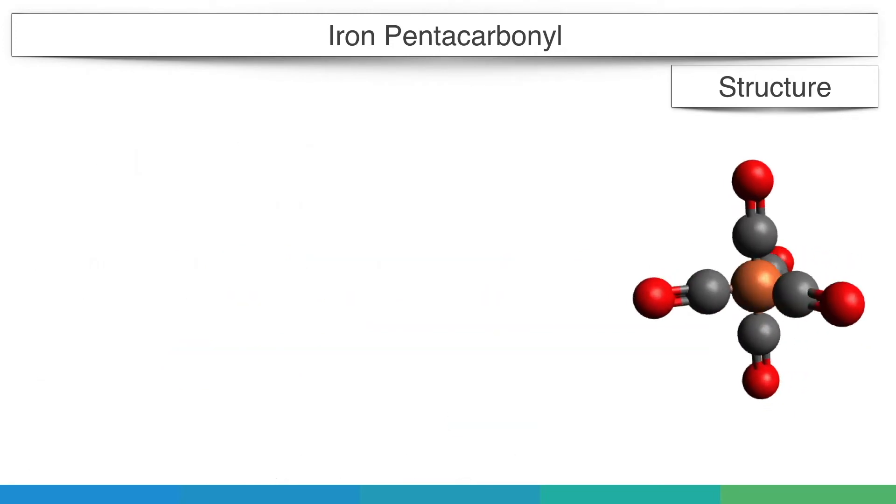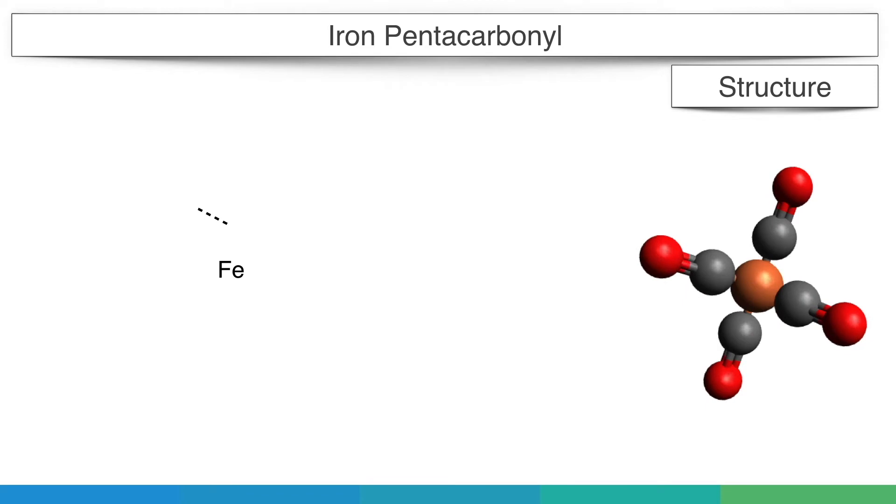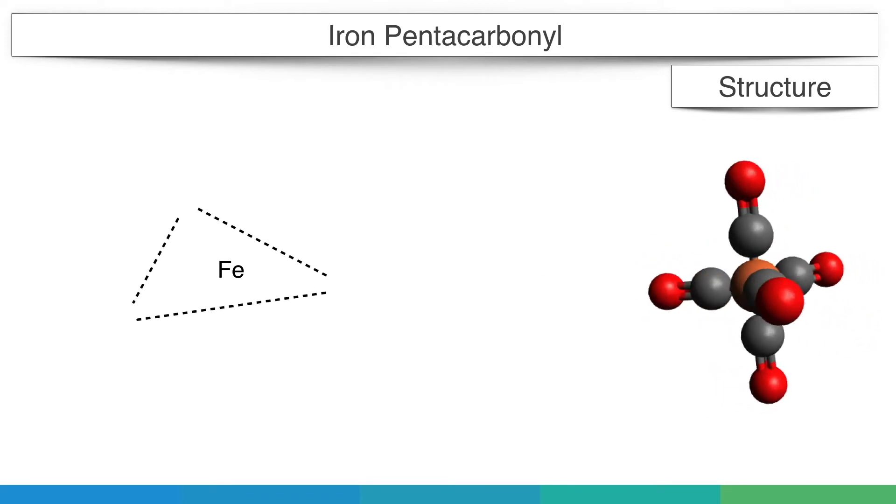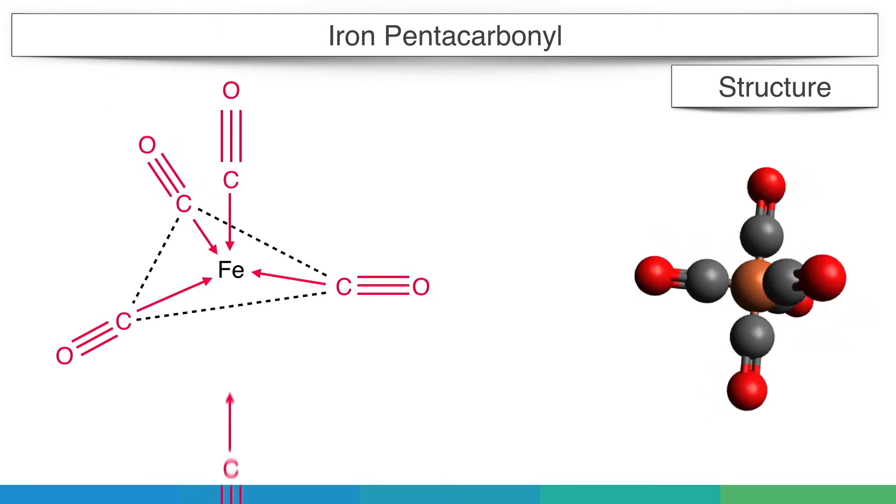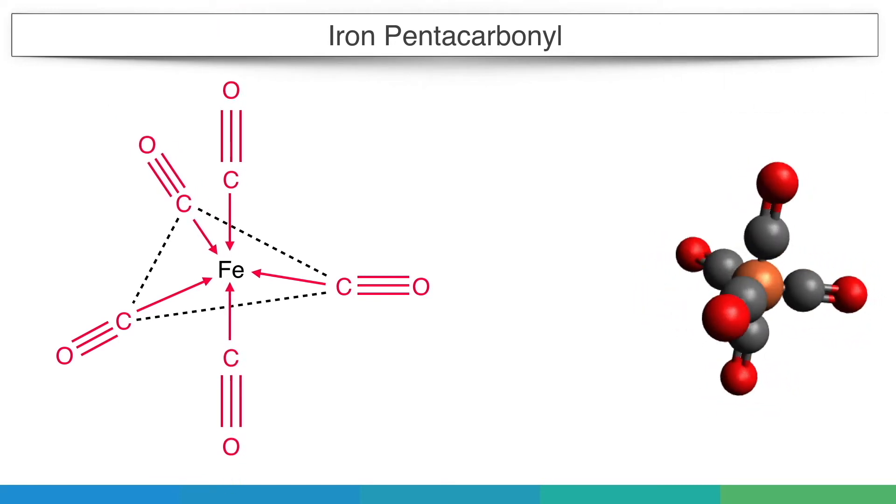Since iron undergoes dsp3 hybridization, iron pentacarbonyl has trigonal bipyramidal structure with iron at the center, three carbonyl groups at the equilateral positions, and two carbonyl groups at apical positions.